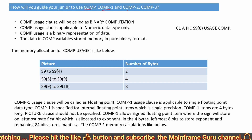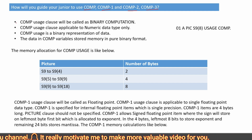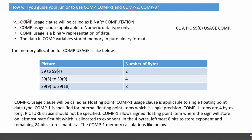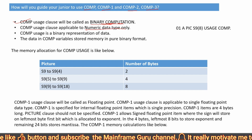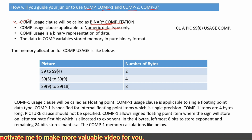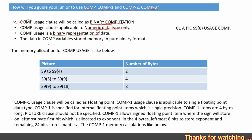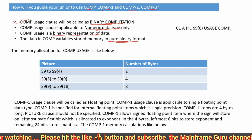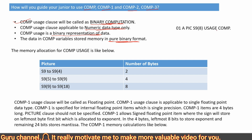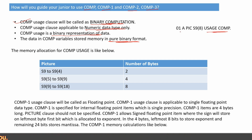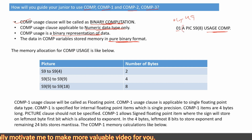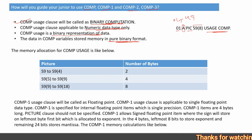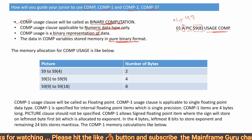The first question is: how will you guide your junior to use COMP, COMP-1, COMP-2, and COMP-3? COMP is called binary computation and it is applicable to numeric data type only. It is a binary representation of data, and the data in the COMP variable will be stored in pure binary format. To declare a COMP variable, we use a level number from 01 to 49, then variable name, then PIC clause.